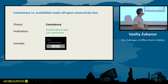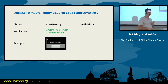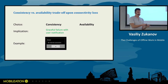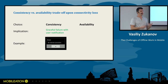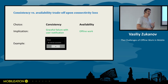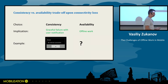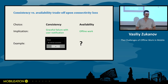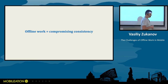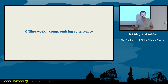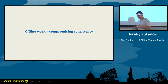On the other hand, we can choose availability. Availability means: okay, we cannot reach the backend now, but we would like to let the user keep using our application and deliver value to them. That's what offline work is about. The example of offline work is a bit more complicated than I can fit here, but we will see a simple example later. If you build an application that will work when there is no internet connectivity, you choose either of these — and choosing availability, offline work, means you compromise consistency.